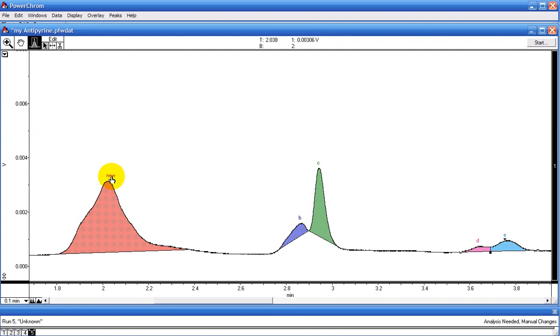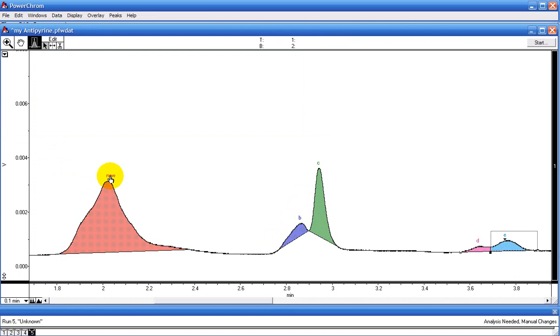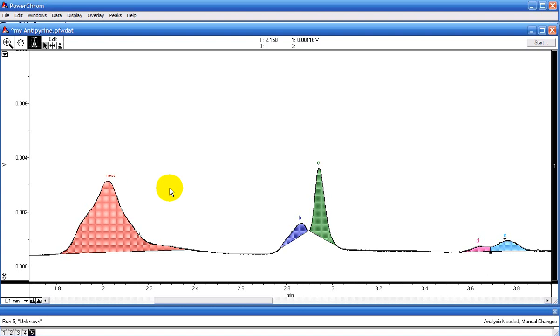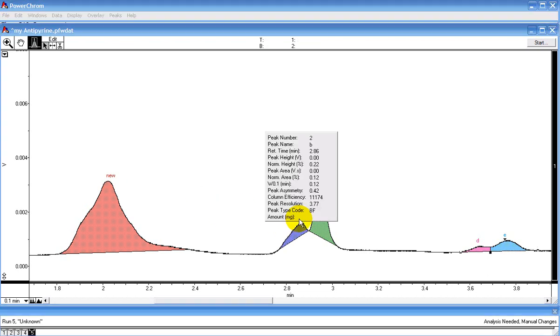All of the information in the peak report is also available from the chromatogram. If you click on top of the name, all of the information is listed there for all of the peaks.